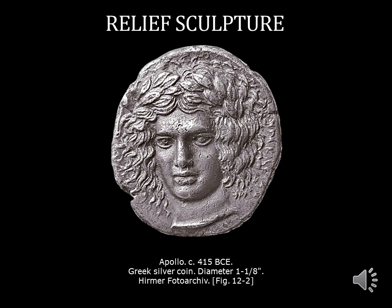This is a Greek silver coin of Apollo from around 415 BCE. This is an excellent example of what a sculpture in relief looks like. You have your image raised from the surface — when you rub your fingers across it, you would feel bumps and be able to make out the general characteristics of the sculpture. Coins have a specific type of relief called low relief. We will be discussing two different types: low and high relief sculpture.